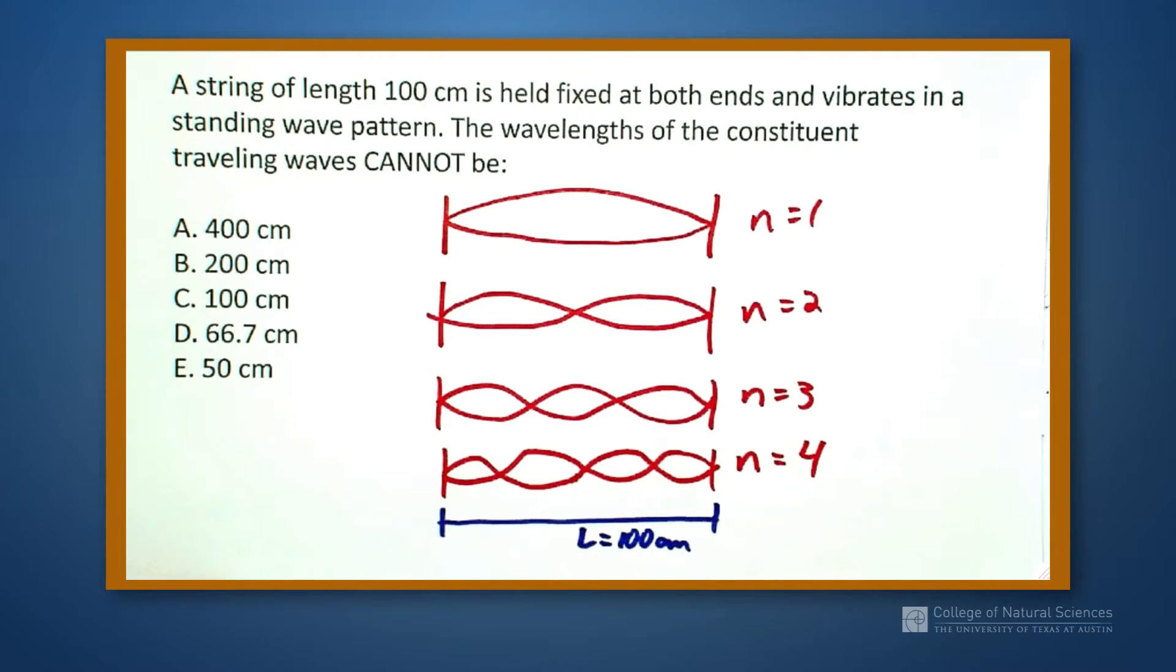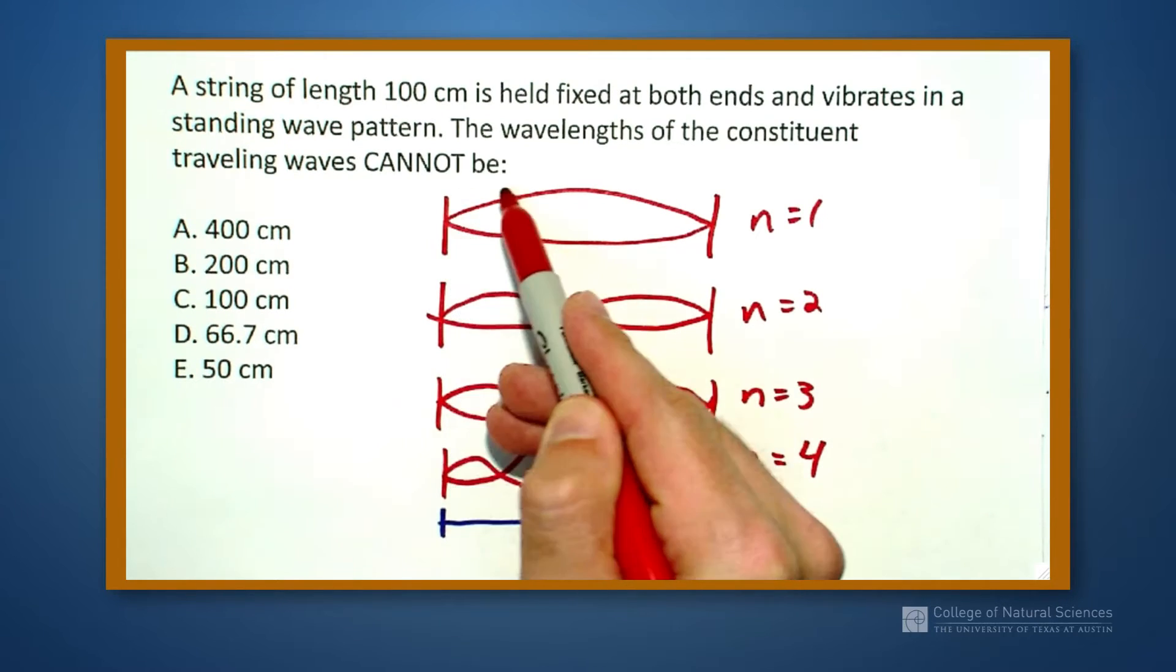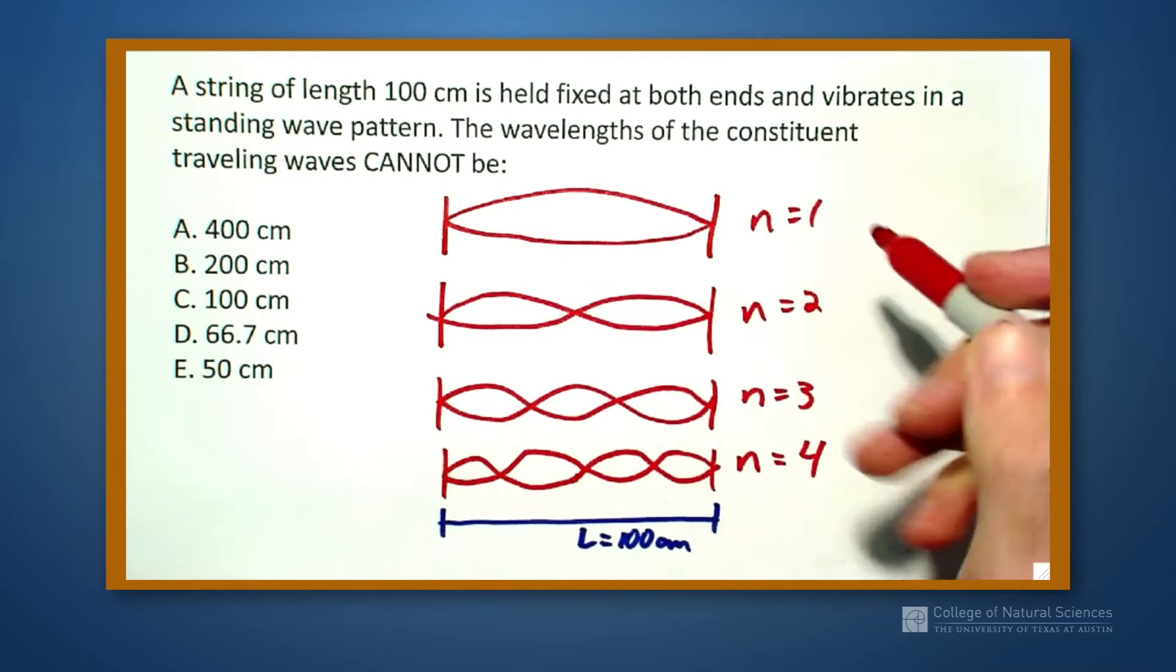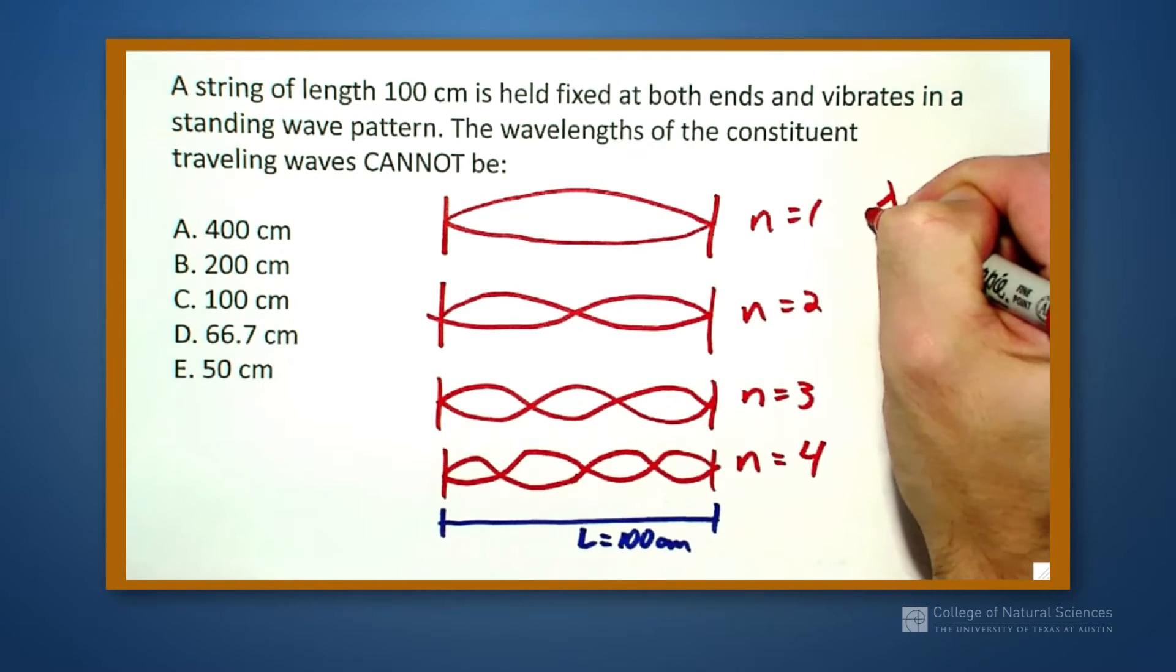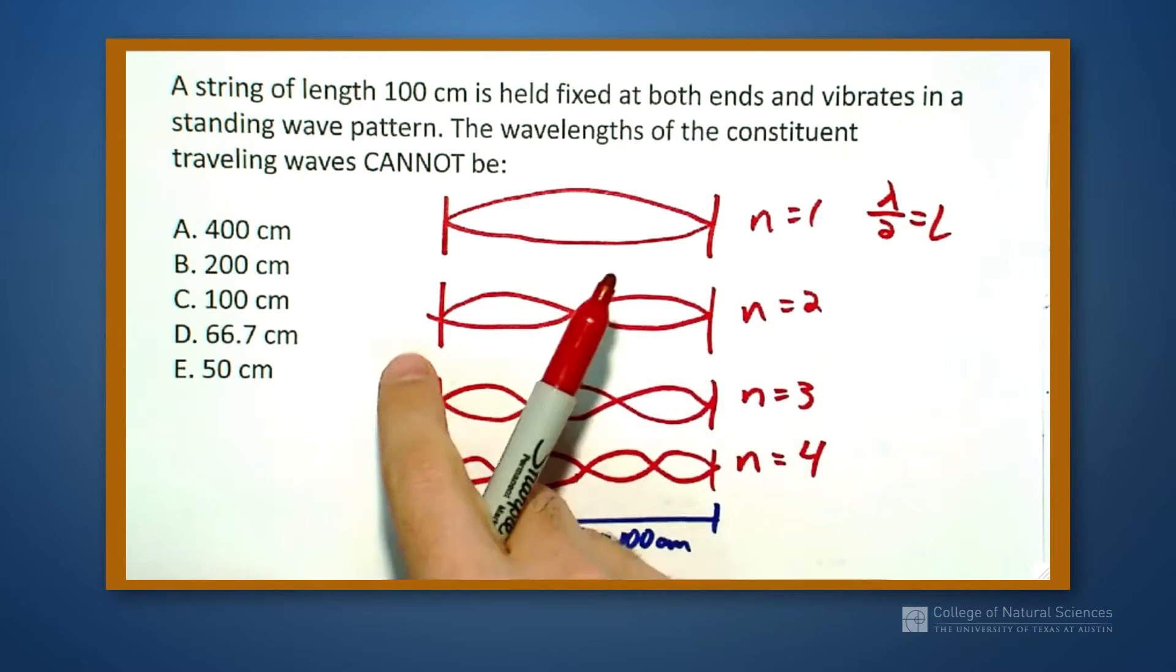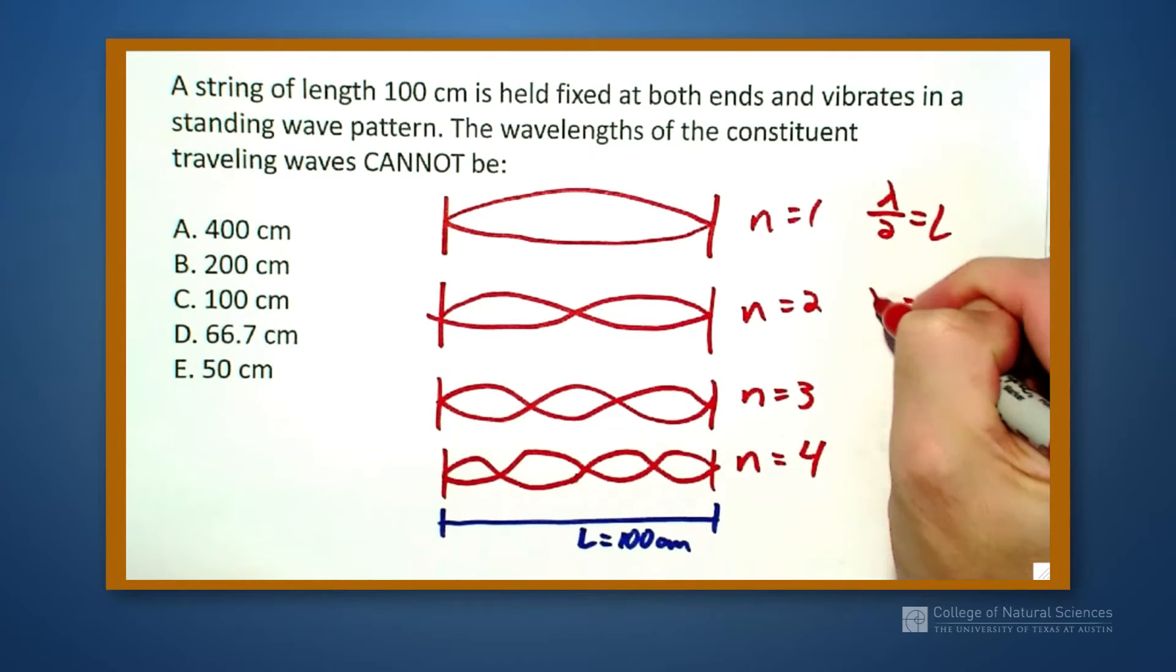Well, I'm going to look at these and say, this one right here is equal to lambda over 2 equals L. This one right here, L is equal to lambda.